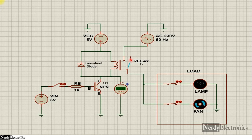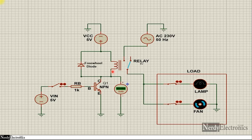The relay has a common pin, a normally closed and normally open pin. We also have an AC supply. The power from the relay goes to two loads: the lamp and the fan. Across the relay, we have a freewheel diode. We should always put a freewheel diode with inductive loads to protect the circuit from reverse EMF generated when power is cut off to the inductive load.